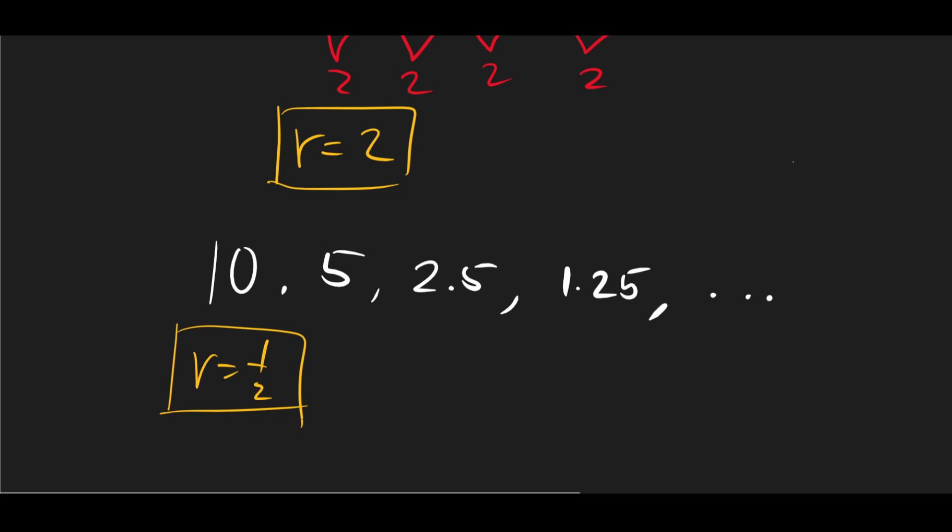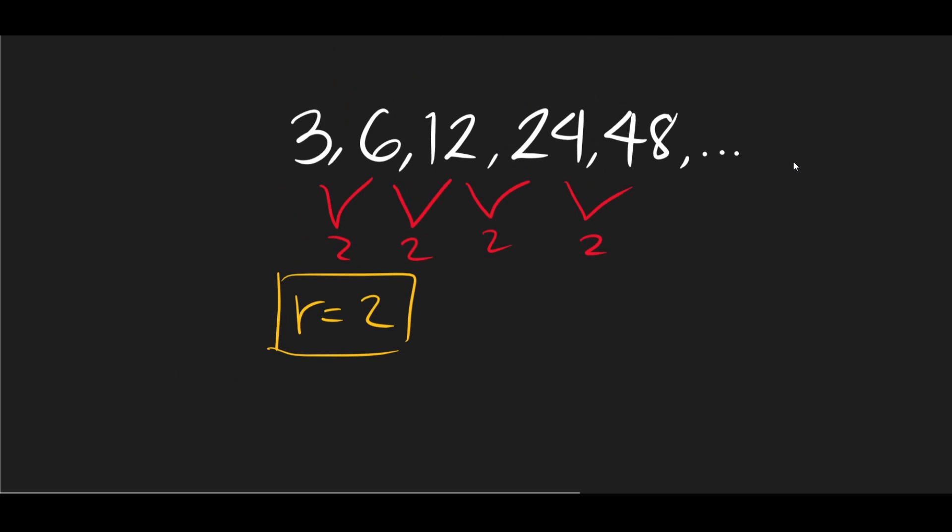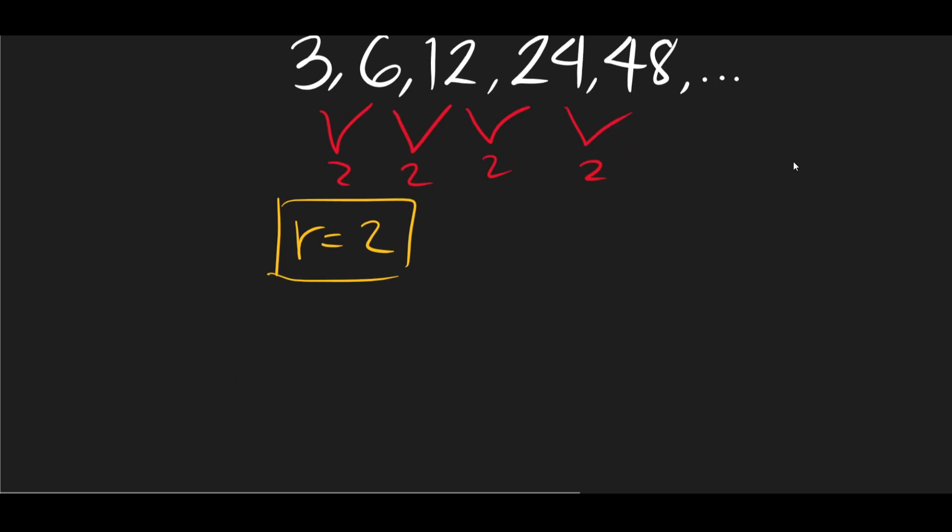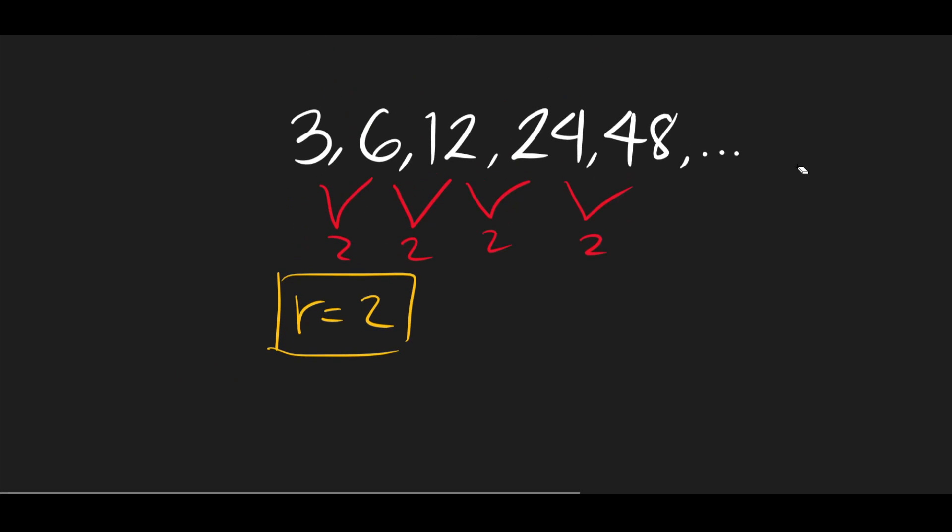So now let's try to come up with a formula to getting the nth term of a particular geometric sequence. Let's try to observe this example right here. If we write this generally, we have r = 2, a1 = 3. So we have here a1. Then our second term will be a1 multiplied by r. a1 is 3, r is 2, so we get 6.